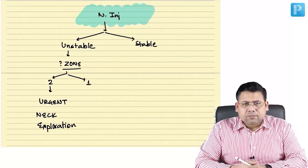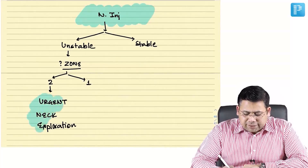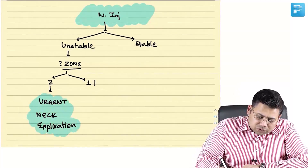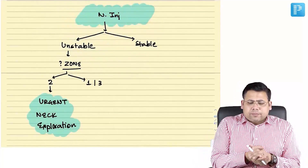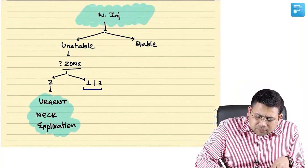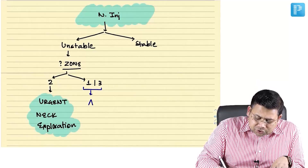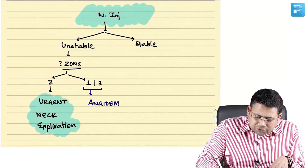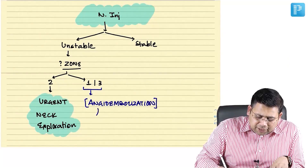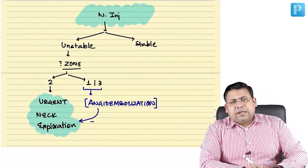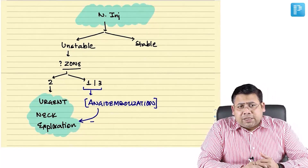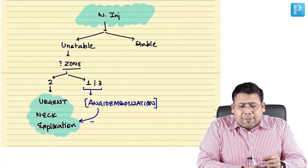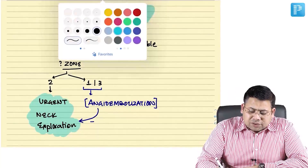If it is Zone 1 or Zone 3 in an unstable patient, the first task is to buy some time by controlling the bleeding. This is done by angioembolization. If angioembolization fails, you go for urgent neck exploration. It may not stop the bleeding completely but at least slows it down and buys time.